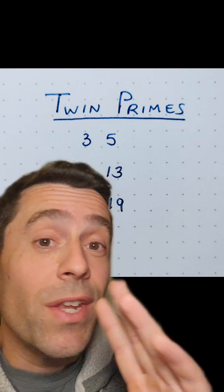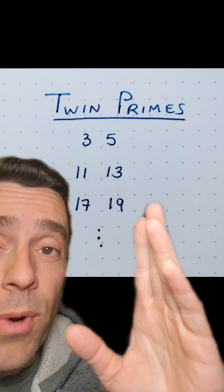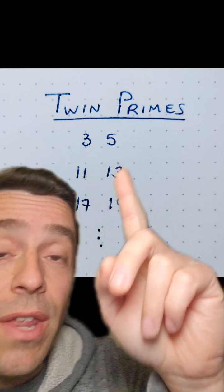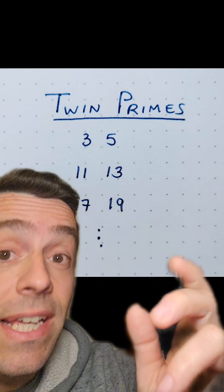I think I've just invented a new kind of prime. You know about twin primes, right? Primes that differ by 2, like 3 and 5, 11 and 13, 17 and 19.